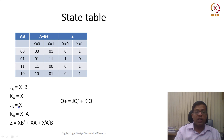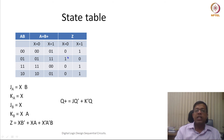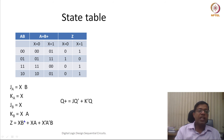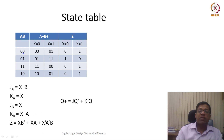When X is 1, JB is 1 and KB is 0, so B_plus is going to be 1. For Z: if X is 0 then Z is 0; if X is 1 then B_dash is 1 and X is 1 so output is going to be 1. This is how we calculate the value of A-plus and B-plus in all scenarios.